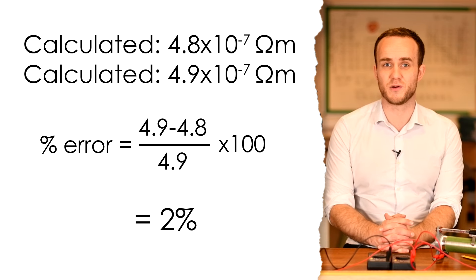The uncertainty in this experiment is fairly low so long as you measure your PDs and currents to 3 sig figs. The only real uncertainty is going to be in the cross-sectional area. Now the resolution of the micrometer was 0.01 millimeters.